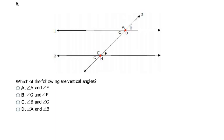Which of the following are vertical angles? We have E and H across from each other, G and F across from each other, A and D, and B and C — four sets total. The pair listed is C: B and C, because they are directly across from each other at the intersection. Vertical angles must be at the same intersection.